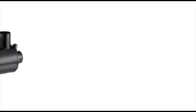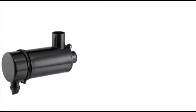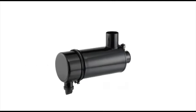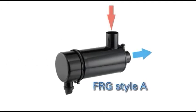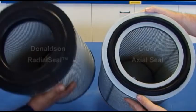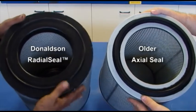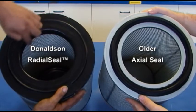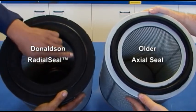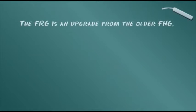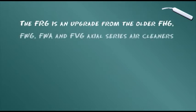In this case, let's assume your vehicle will take an FRG style A air cleaner with airflow in the side and out the end. The FRG is an air cleaner family which features the newer, more efficient Donaldson radial seal design. This is an upgrade from the older FHG, FWG, FWA, and FVG axial seal series.